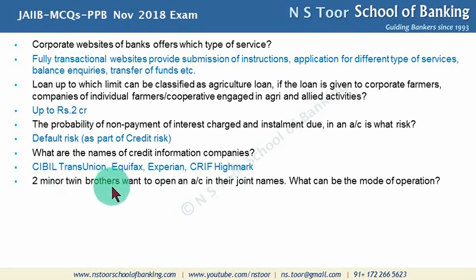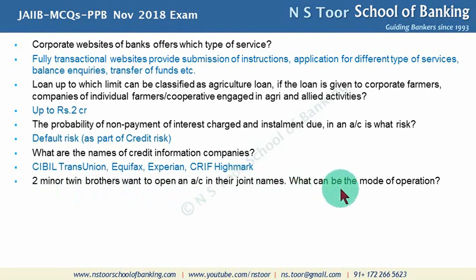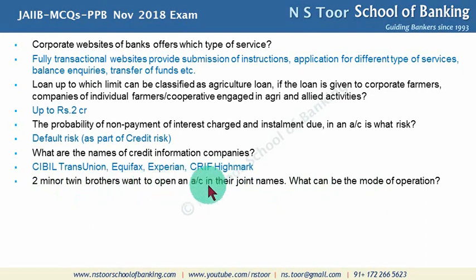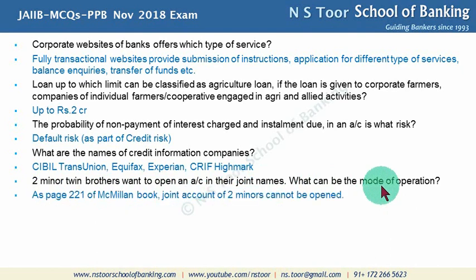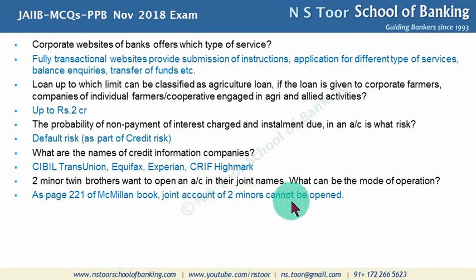Two minor twin brothers want to open an account in their joint names. The mode of operation cannot be determined because a joint account of two minors cannot be opened.